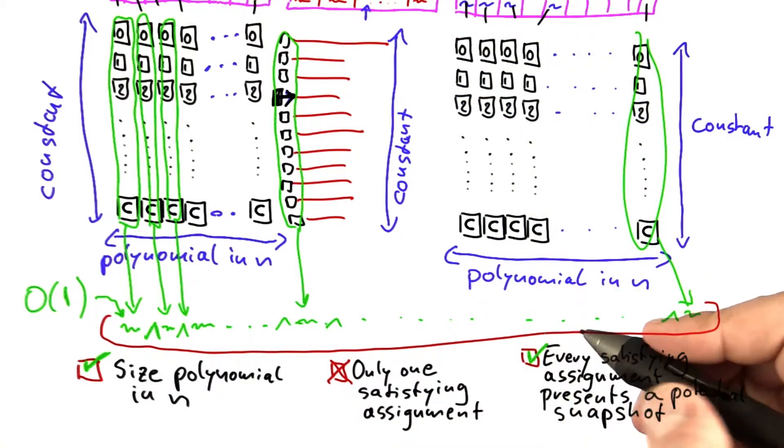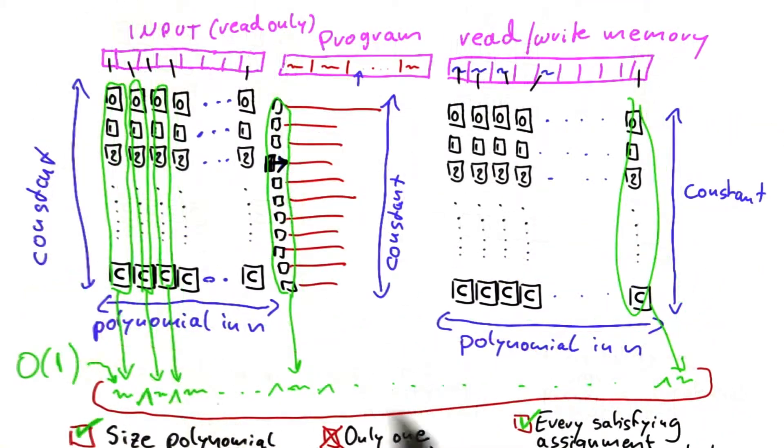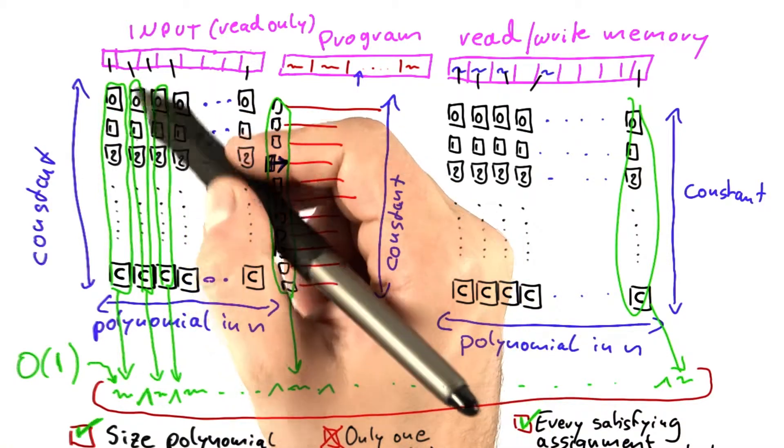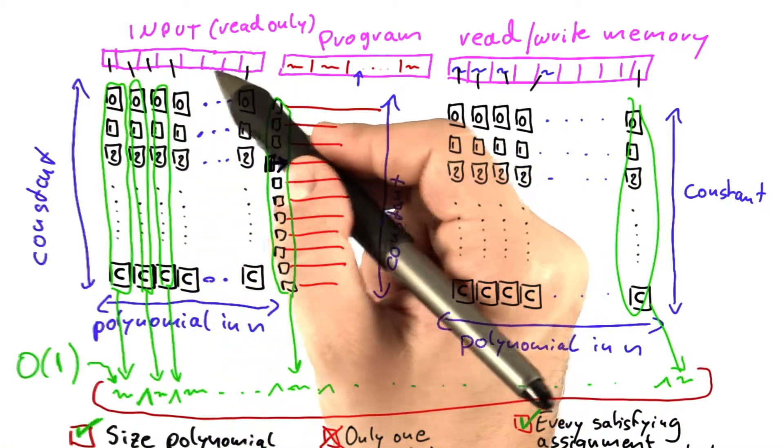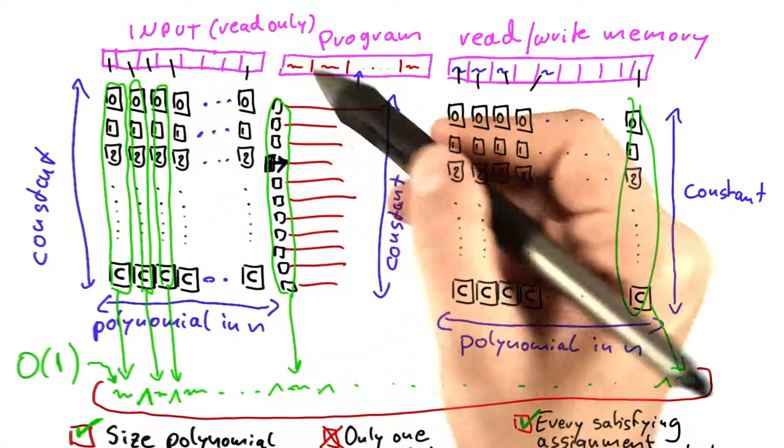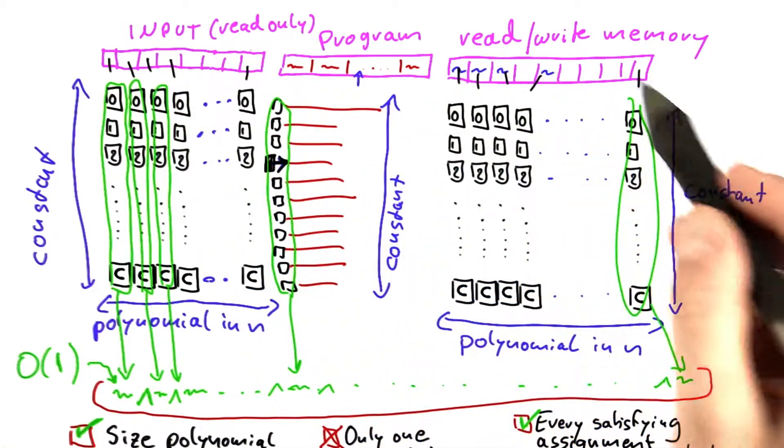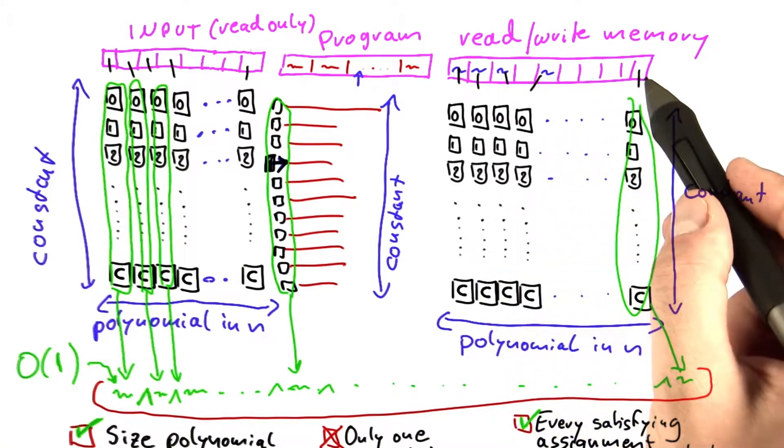And this gives us the third property, which means that this satisfying assignment defines a snapshot because it will tell you exactly what's in this memory cell here. And so on. It will tell you exactly where the program is at. And it will also tell you exactly what's here in this memory.